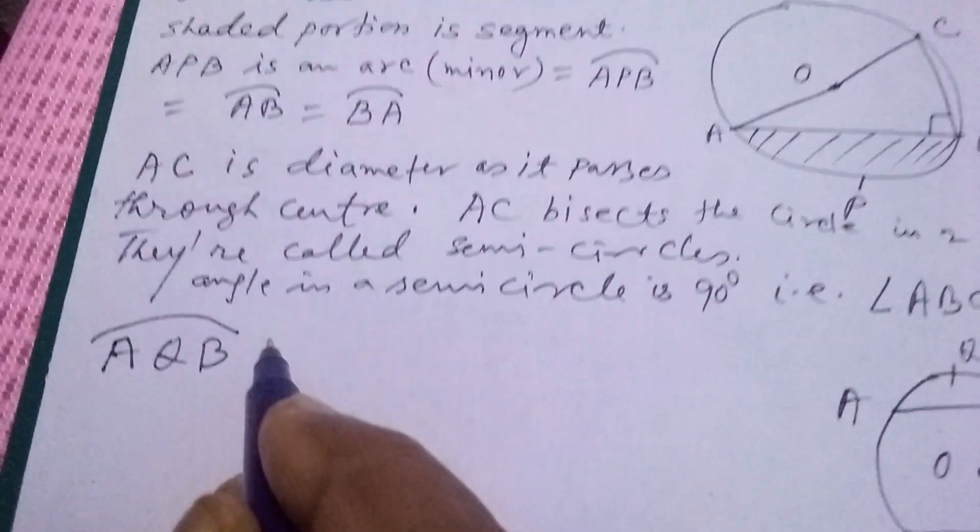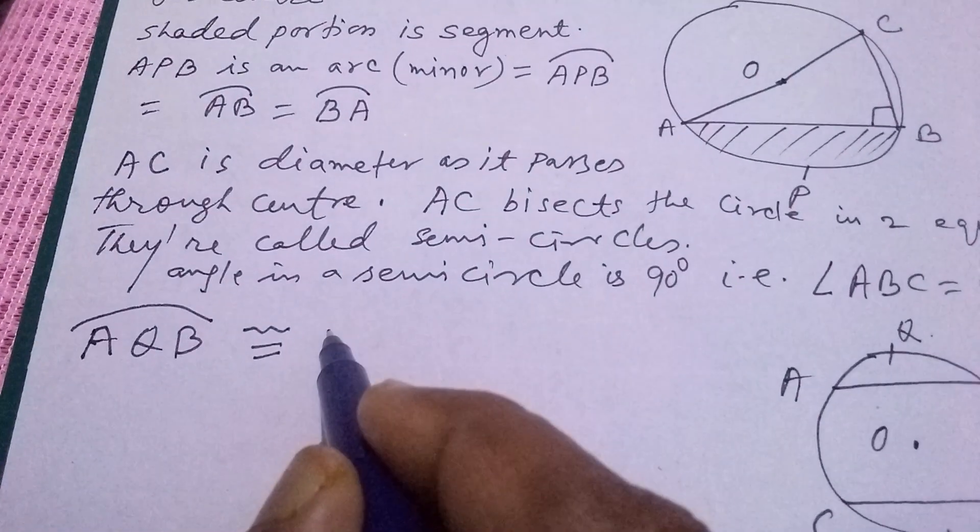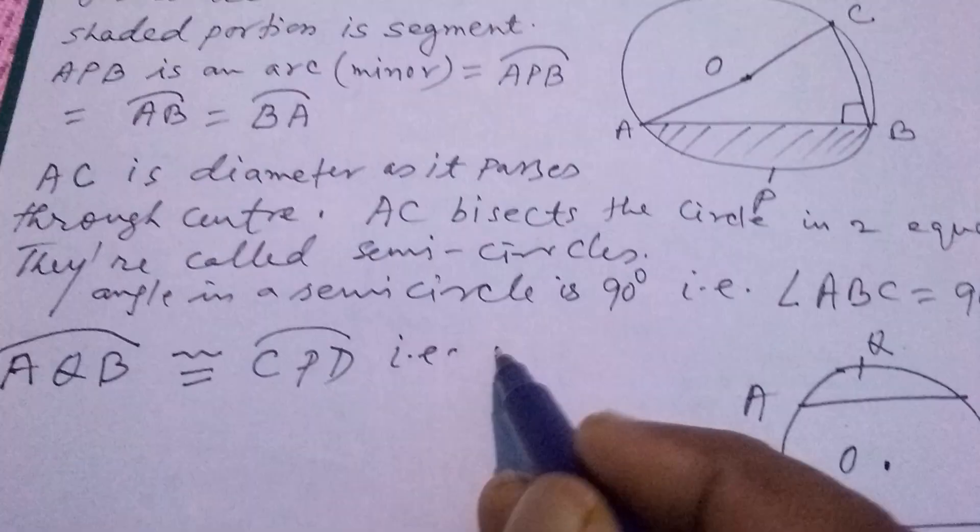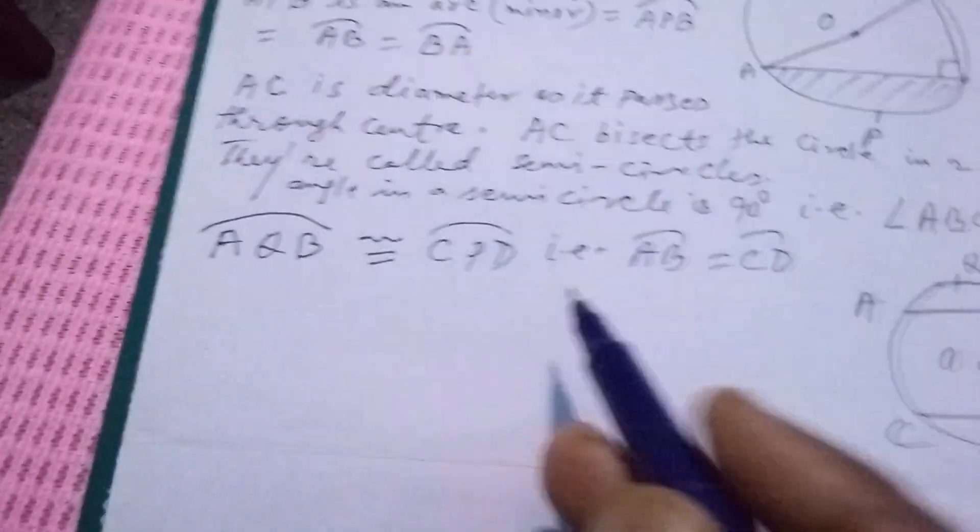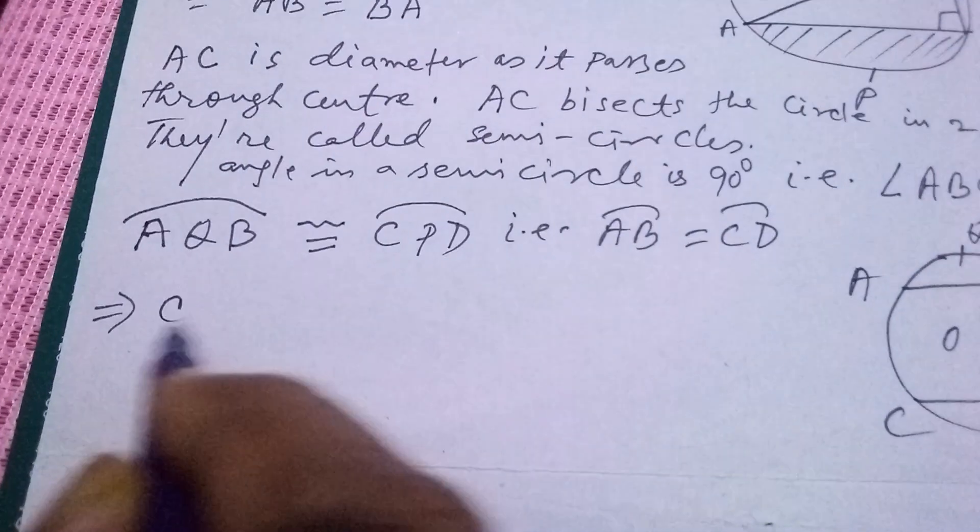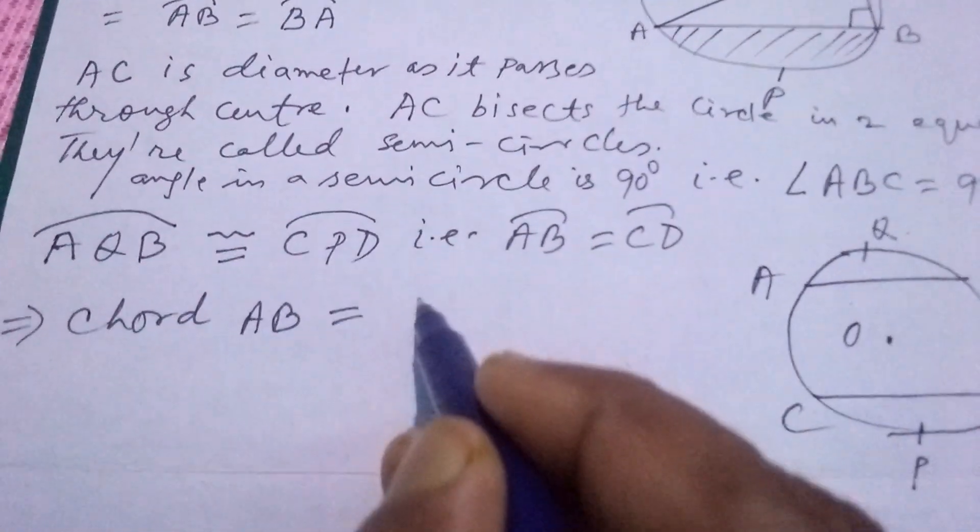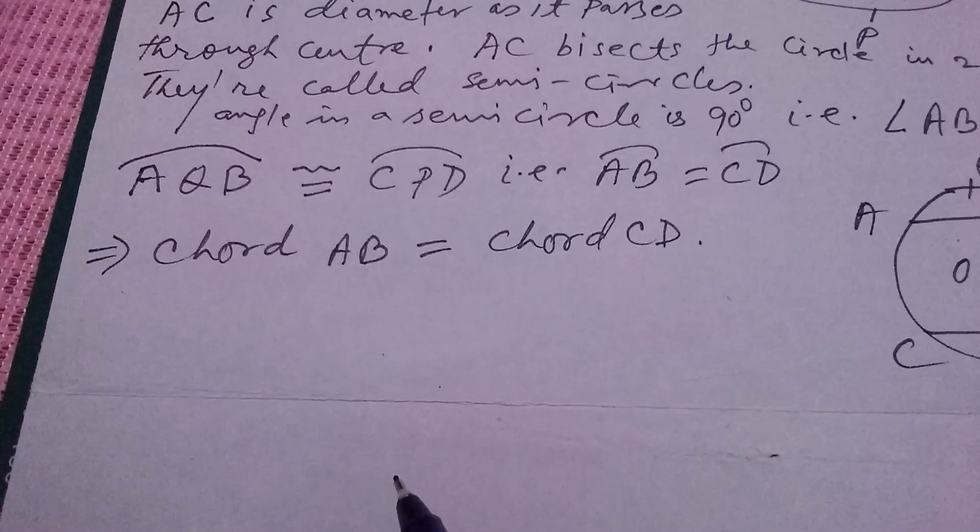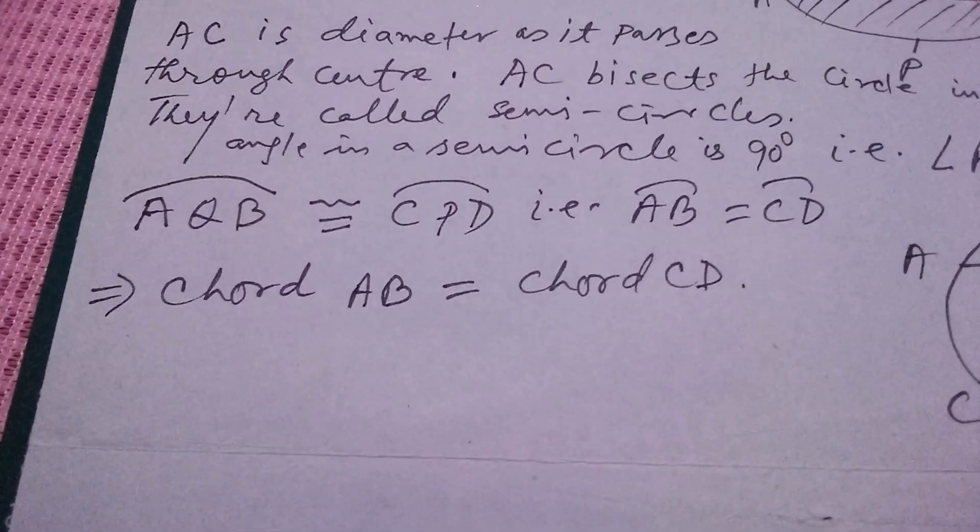It is an arc. And this arc is equivalent to, congruent to, C, P, D arc. That is, AB arc is equal to CD arc. Then, if two arcs are equal, then chord AB is equal to chord CD.